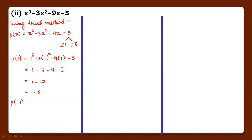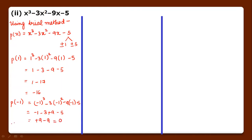We try P(minus 1): minus 1 cube minus 3 into minus 1 square minus 9 into minus 1 minus 5. That is minus 1, minus 1 squared is 1, so minus 3 plus 9 minus 5. Negatives: 5 plus 3 plus 1 = 9. Positive: 9. So plus 9 minus 9 equals 0. Since P(minus 1) = 0, x plus 1 is a factor of P(x).